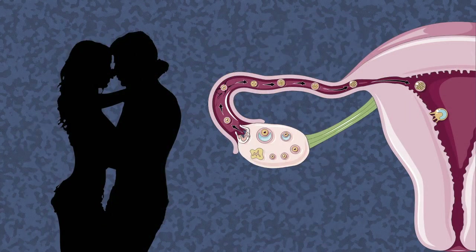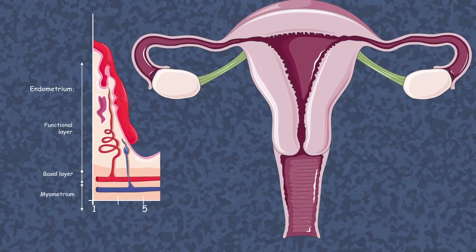But imagine that after intercourse this female has undergone a fertilization event in the fallopian tube. After fertilization, the embryo develops and eventually has to be implanted into the endometrium, so in that situation the menstrual flow would be blocked. Now let's look at the molecular and cellular events in a bit more detail.